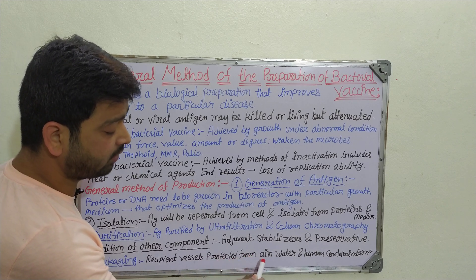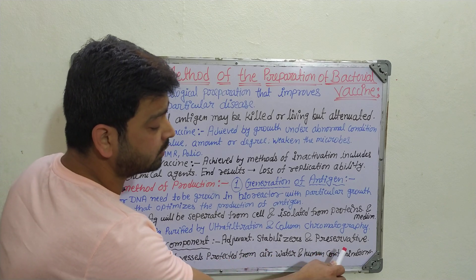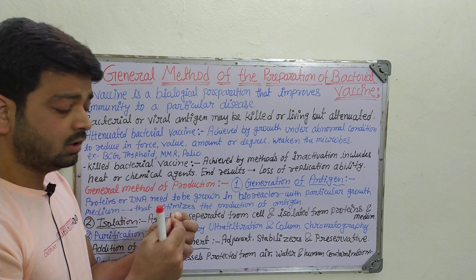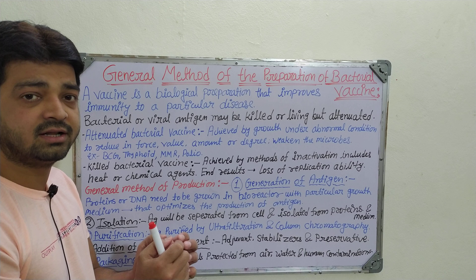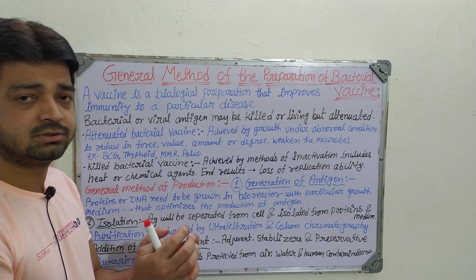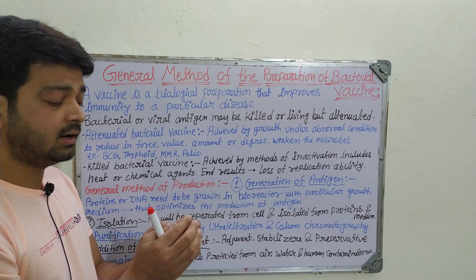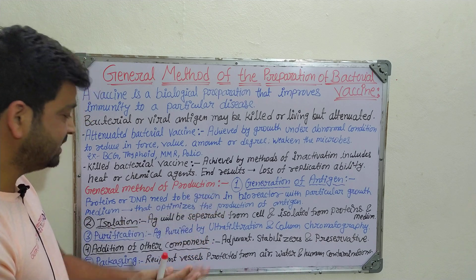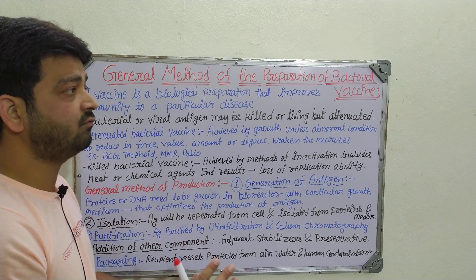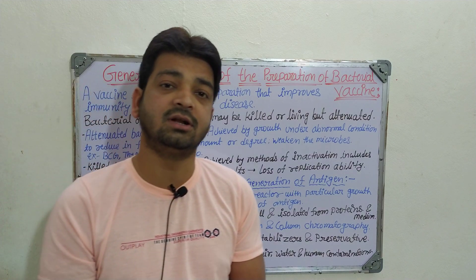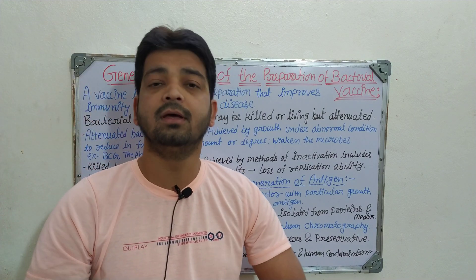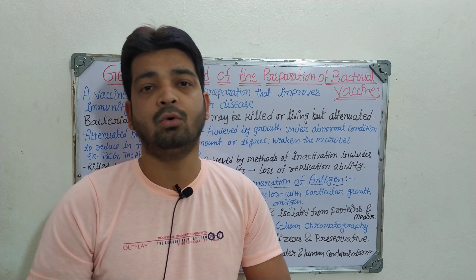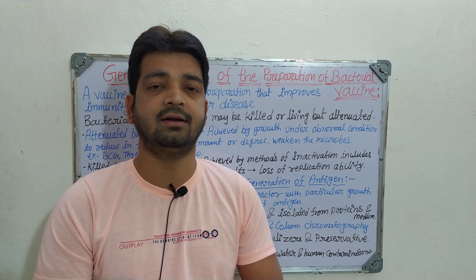The fifth step is packing. The vaccine must be protected from air, water, and human contamination using airtight containers that prevent moisture from reaching the living or dead bacteria. These five steps form the general method of production of bacterial vaccines. Bacterial vaccines have been important from the beginning, with examples including polio and typhoid vaccines. Thank you.